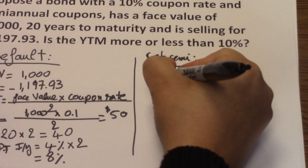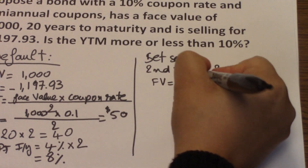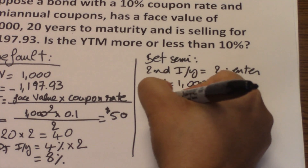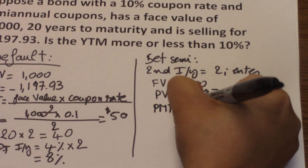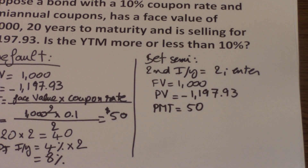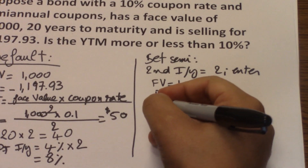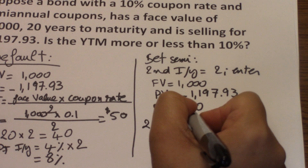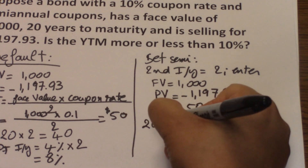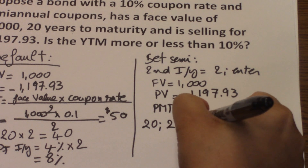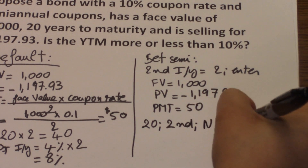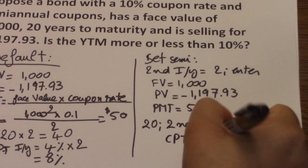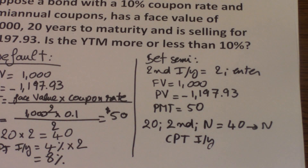With the semi-annual method, the inputs are: FV = 1,000; PV = negative 1,197.93; PMT = 50, since you still receive $50 every 6 months. For N, you input 20, then press 2nd N — the calculator will double it automatically — then press N again. That is your N.